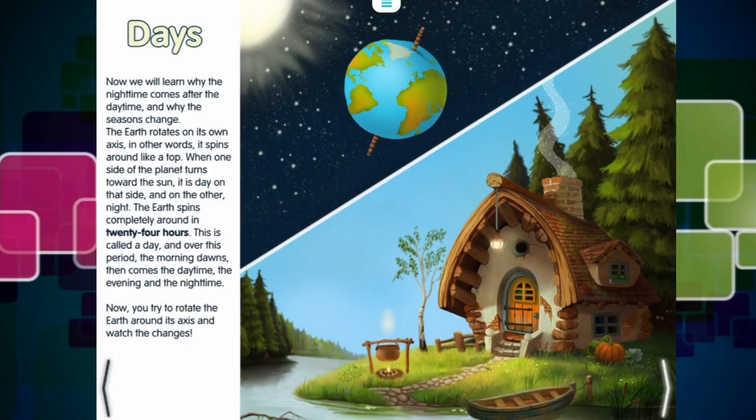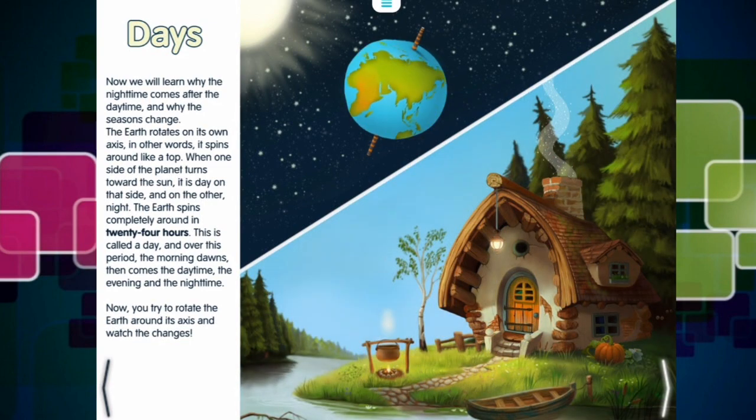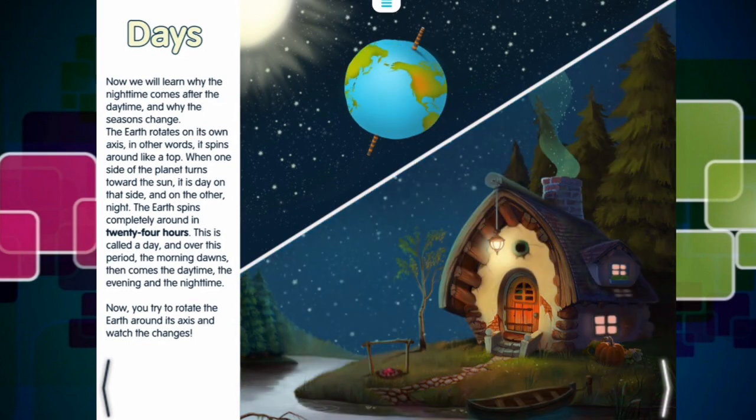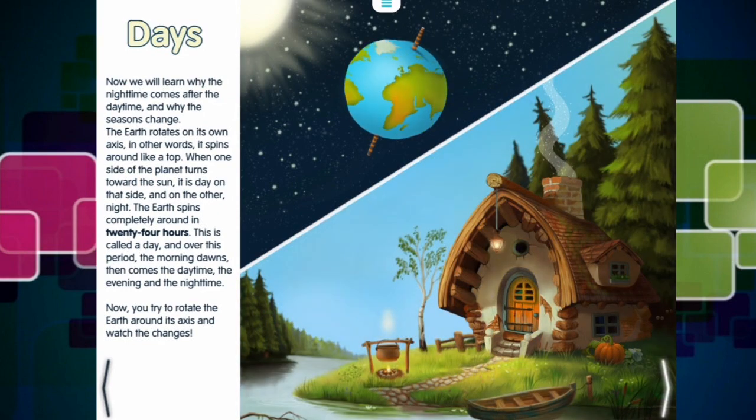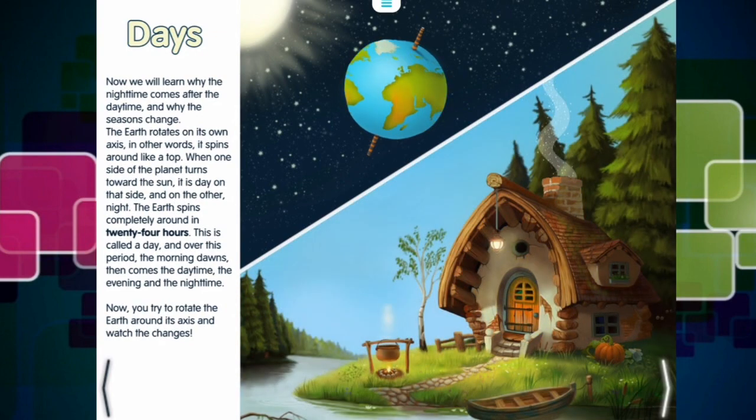Now, we will learn why the nighttime comes after the daytime, and why the seasons change. The Earth rotates on its own axis. In other words, it spins around like a top. When one side of the planet turns toward the sun, it is day on that side, and on the other, night. The Earth spins completely around in 24 hours. This is called a day. And over this period, the morning dawns, then comes the daytime, the evening, and the nighttime. Now, you try to rotate the Earth around its axis and watch the changes.